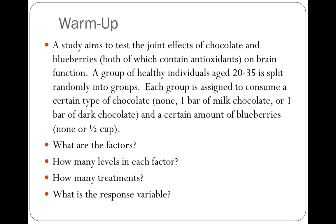A group of healthy individuals, age 20 to 35, is split randomly into groups. Each group is assigned to consume a certain type of chocolate — either none, one bar of milk chocolate, or one bar of dark chocolate — and a certain amount of blueberries, either none or half a cup.